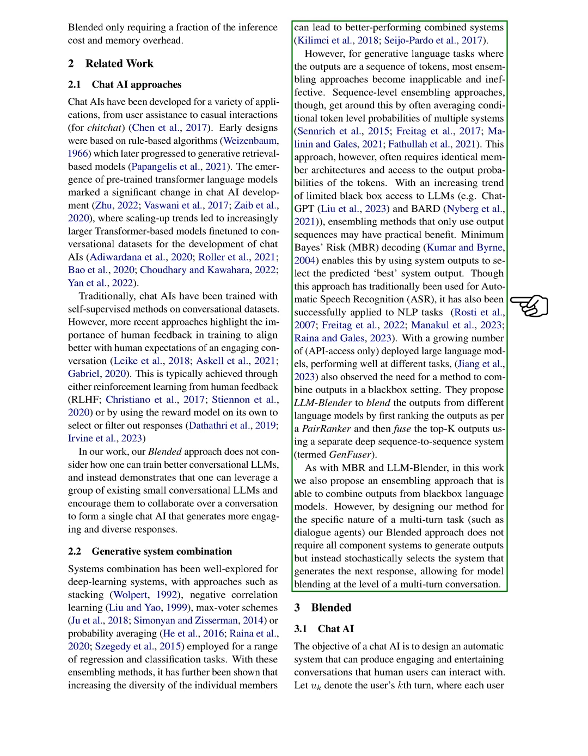As with MBR and LLM Blender, in this work we also propose an ensembling approach that is able to combine outputs from black-box language models. However, by designing our method for the specific nature of a multi-turn task, such as dialogue agents, our blended approach does not require all component systems to generate outputs but instead stochastically selects the system that generates the next response, allowing for model blending at the level of a multi-turn conversation.